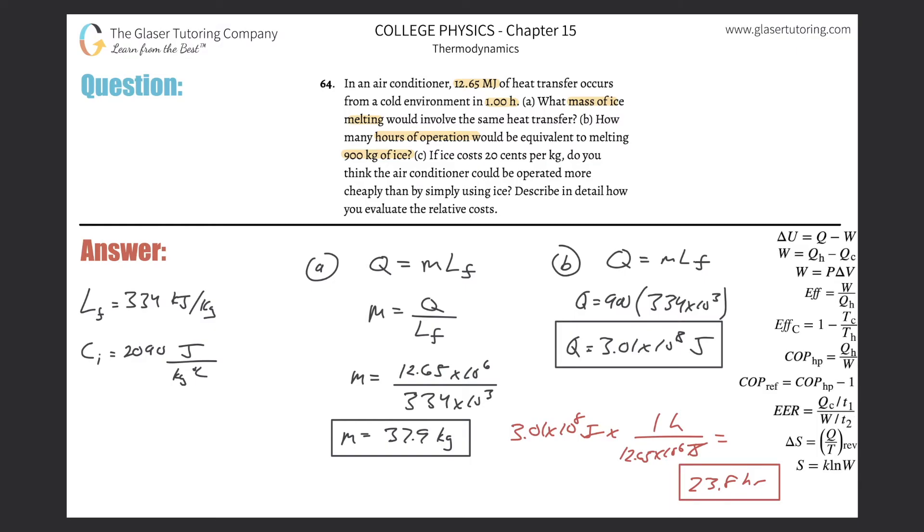So it says if ice costs 20 cents now per kilogram, how much—well, take the 900 kilograms that they gave you. And then it's 20 cents per kilogram. So obviously, to take 900, multiply it by 0.2 in terms of a decimal, 900 times 0.2, that's going to be about 180. $180.